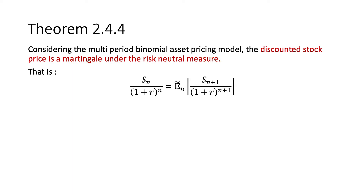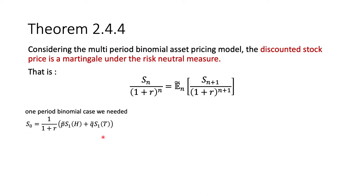Theorem 2.4.4 states that in the multi-period binomial asset pricing model, the discounted stock price is a martingale. That means if you look at the stock price discounted to the present, this martingale relationship holds everywhere. This is easy to show. In the one-period binomial case, all we needed was this relationship to hold, and then it was easy for us to do the algebra to replicate the derivative security by trading only in the stock and the money market.